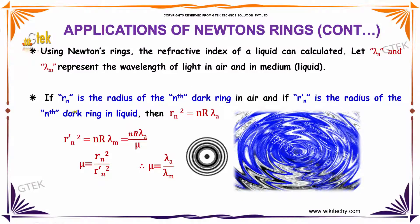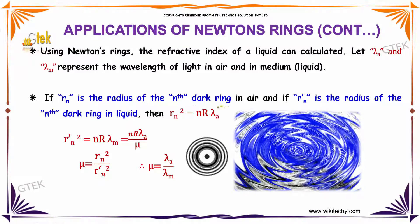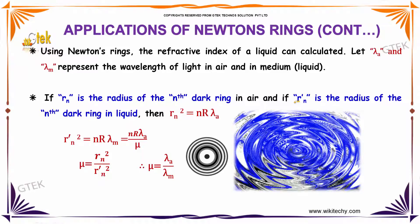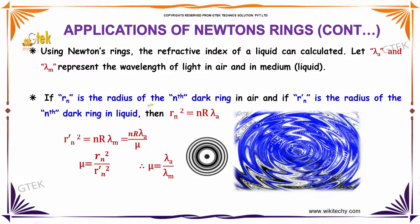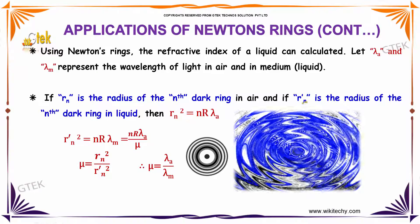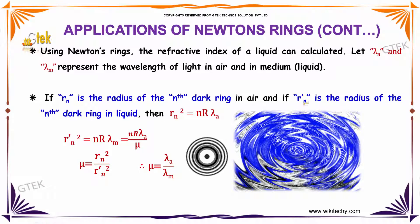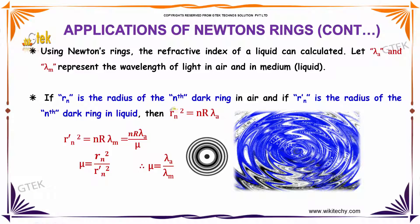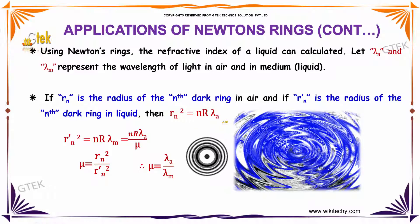If rn is the radius of the nth dark ring in air and rn dash is the radius of the nth dark ring in liquid, then you will be getting rn square is equal to n r lambda a.